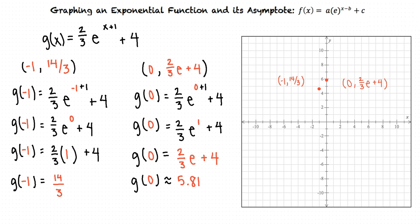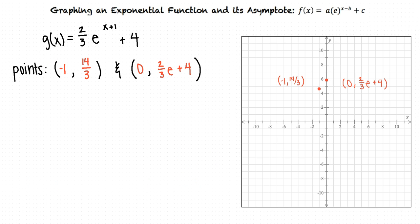So now that we know our two points, how do we find our asymptotes? We know that the standard exponential function f(x) equals e raised to the x has a horizontal asymptote at y equals zero, because the function approaches zero as x decreases without bound.